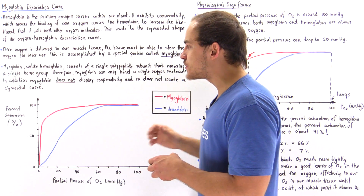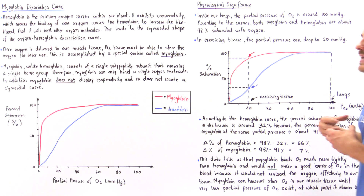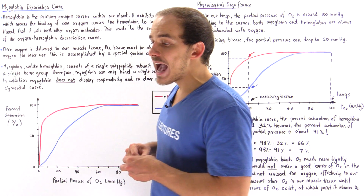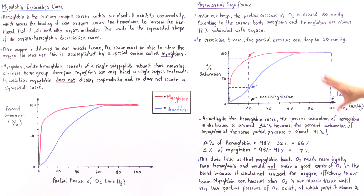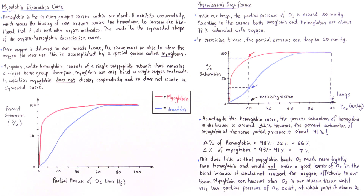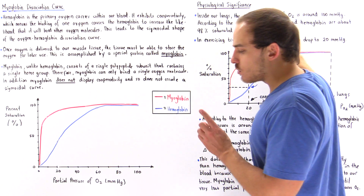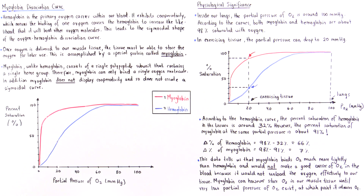Let's begin inside our lungs. Inside our lungs, we have a partial pressure of oxygen equal to about 100 millimeters of mercury. If we plot a vertical line going up from the 100 point and check the corresponding Y-values for both curves, we see that both myoglobin and hemoglobin are about 98% saturated with oxygen when inside our lungs. However, this is not the important point.